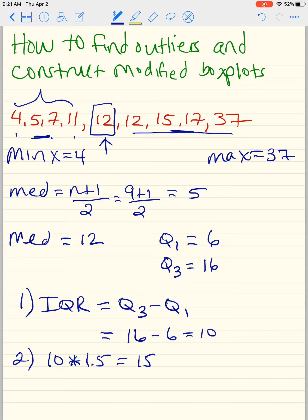I'm going to set that equal to some variable, I'll call it L, for limit. Once we find L, we're going to take Q3 and add L, and Q1 minus L. And so we have 16 plus 15, that's 31. And we have 6 minus 15, that's negative 9.